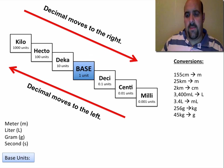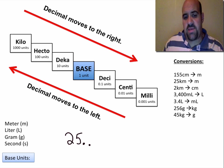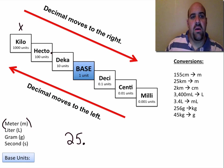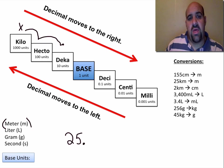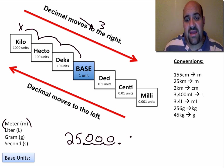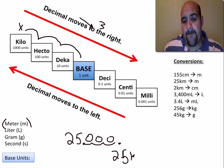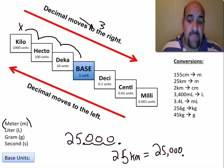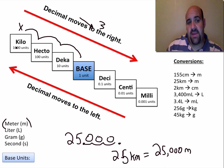Let's try 25 kilometers to meters. We have 25 kilometers — there's an assumed decimal here. Kilo is up here, and meter is a base unit, so we're going down one, two, three steps. The decimal has to move to the right three places: one, two, three. We put in our zeros, so 25 kilometers equals 25,000 meters. That makes sense because one kilometer is 1,000 meters.